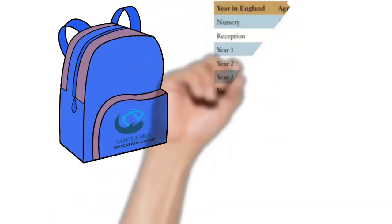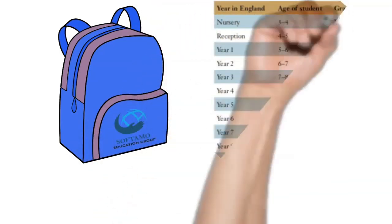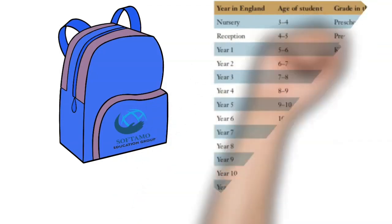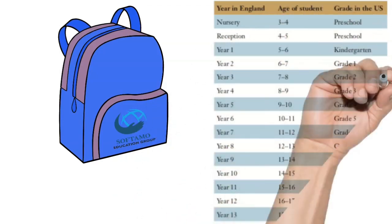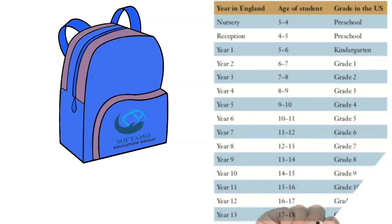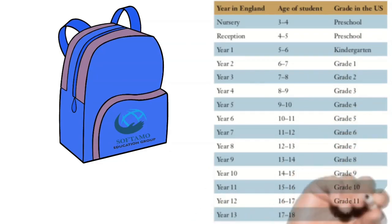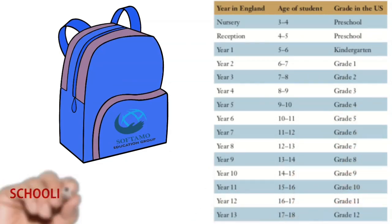USMLE, also known as the US Residency Exam, consists of three steps: Step 1 – Basic Sciences; Step 2 – Clinical Knowledge and Clinical Skills; Step 3 – Patient Management Skills.